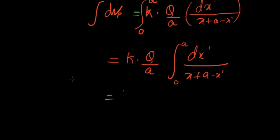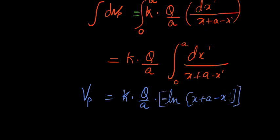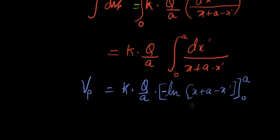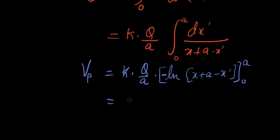Integration of dVP gives you potential at P equals k times Q over a. This is natural log of x plus a minus x prime. But there's a minus in front of x prime, so you will have a minus right here. Let's put a bracket and not forget the limits from zero to a. Now it's pretty simple. We just have to substitute the limits.